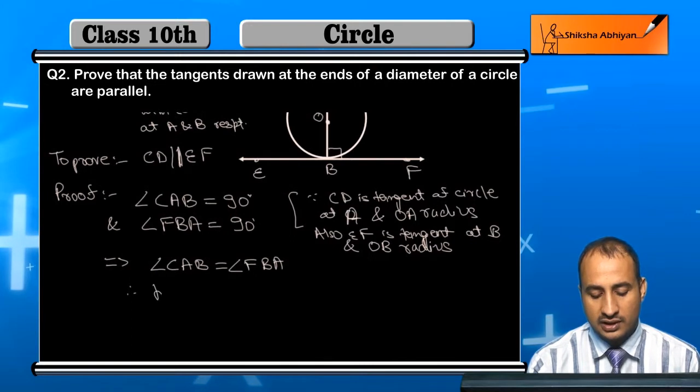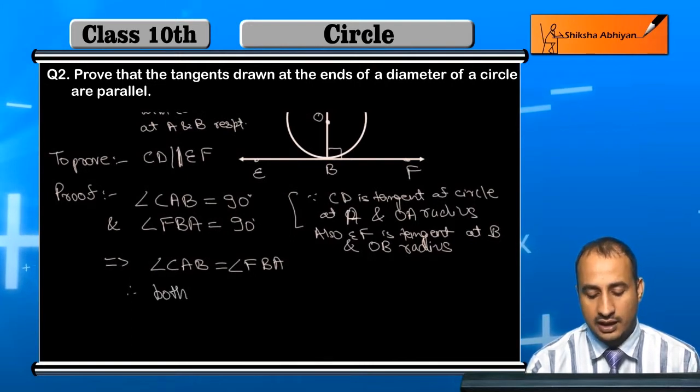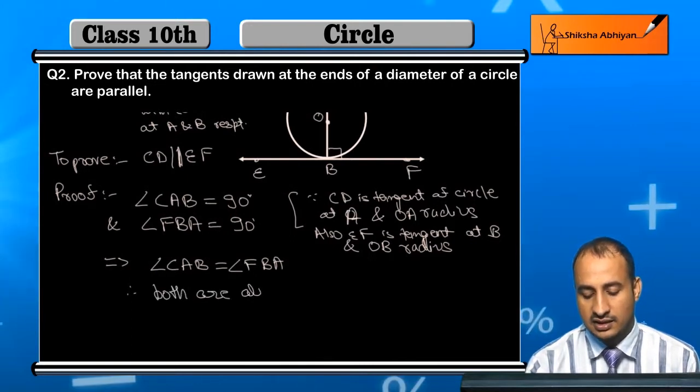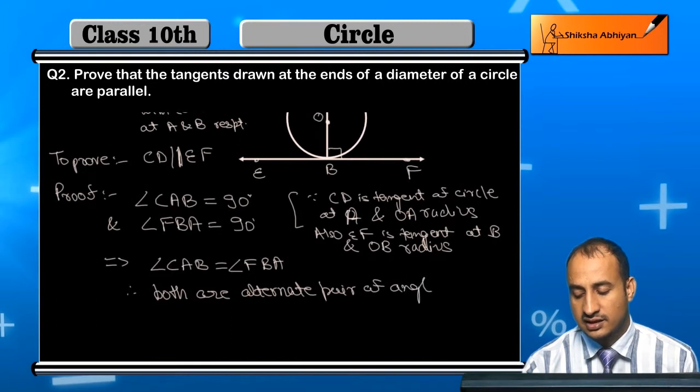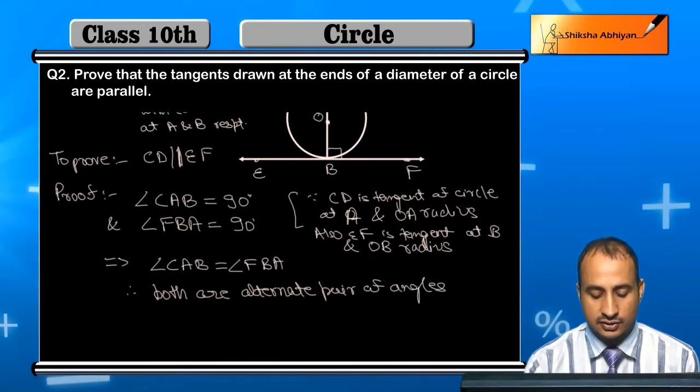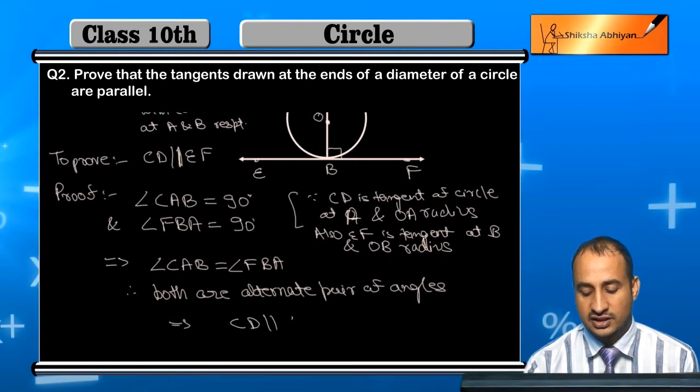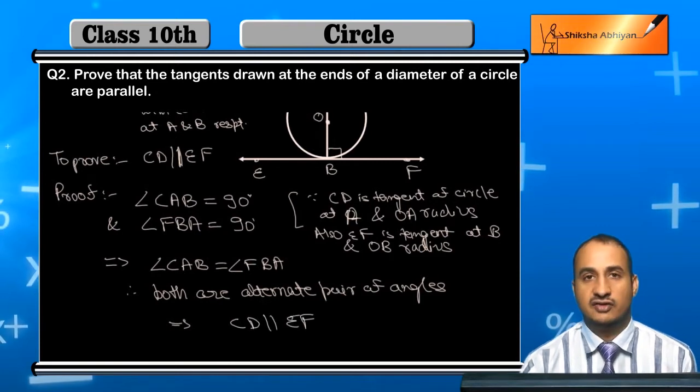So therefore, both are alternate pair of angles. This implies that we can say that CD is parallel to EF.